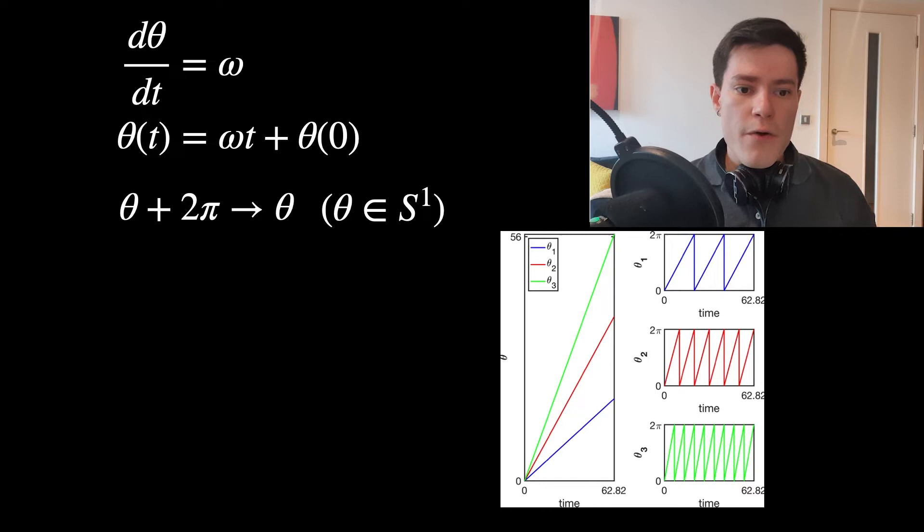What we have instead are equations that look a bit more like a sawtooth: at two pi, the value of theta i gets replaced with zero. You can see that theta one is oscillating more slowly — it has slower, fewer sawtooths over the same amount of time — and theta three has the most.